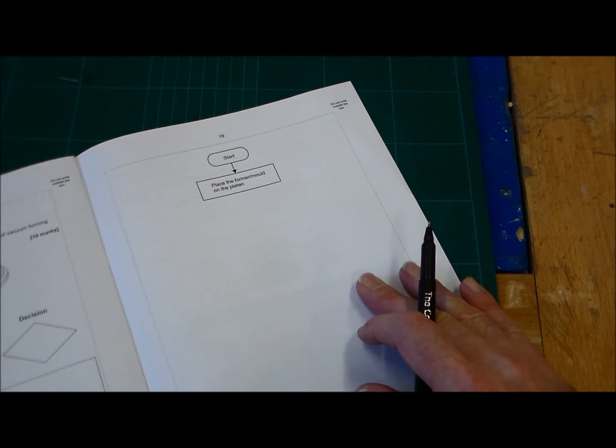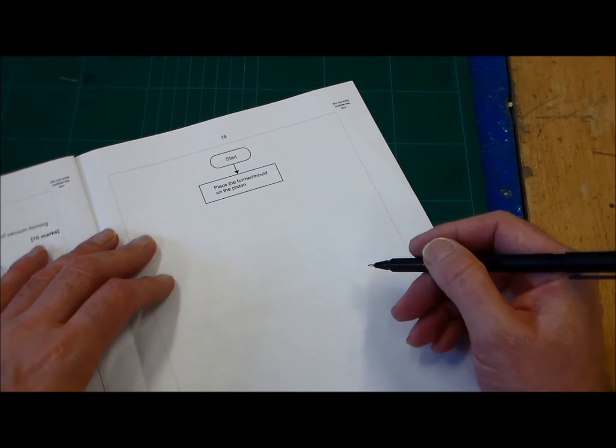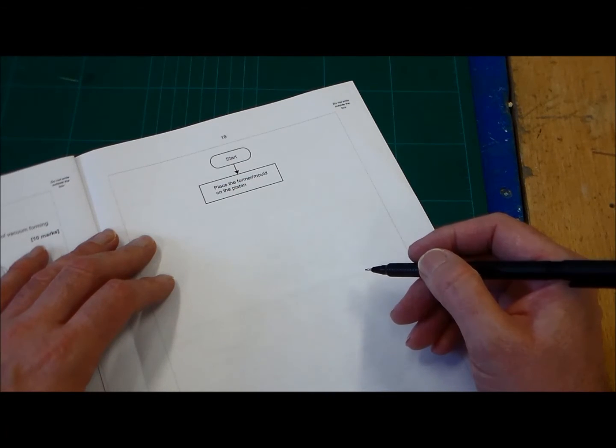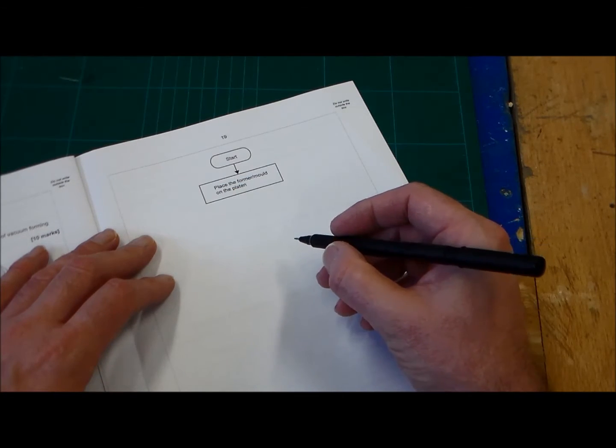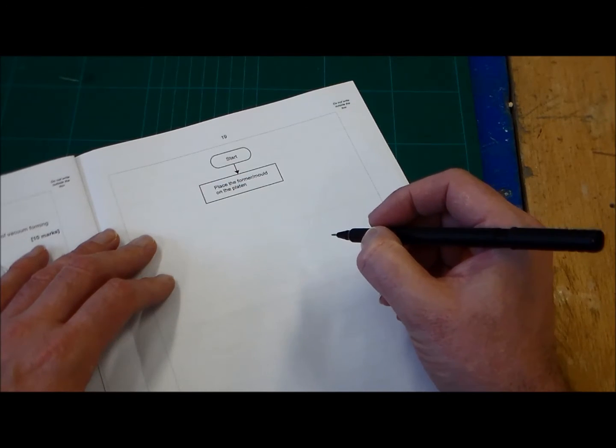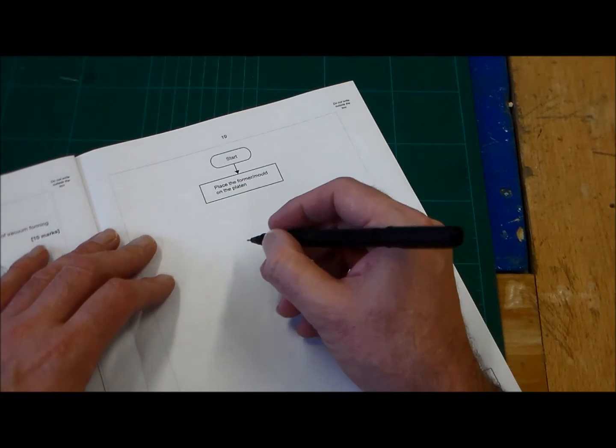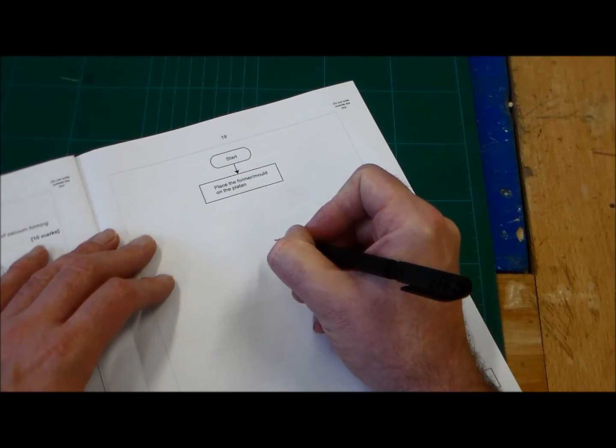We'll just go through the answer on this. So we're looking at vacuum forming. So it's just really the stages. Now, the marks you're going to get are: you're going to get one mark for five correct stages, you're going to get two marks for the correct use of process boxes, and a mark for correct use of decision box, flow arrows, and a return arrow. So using those. So let's just quickly go through this.